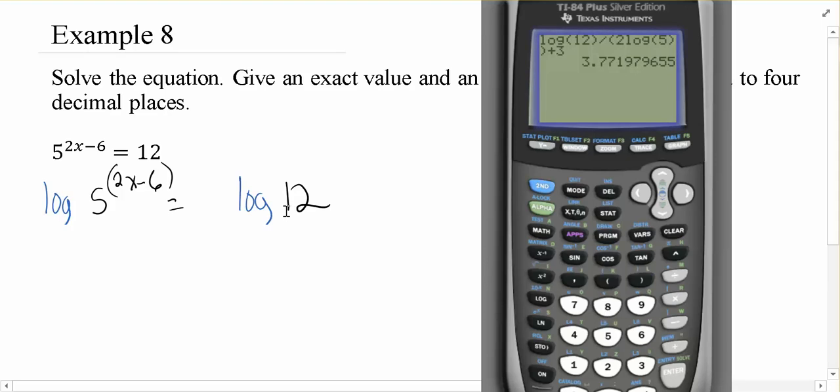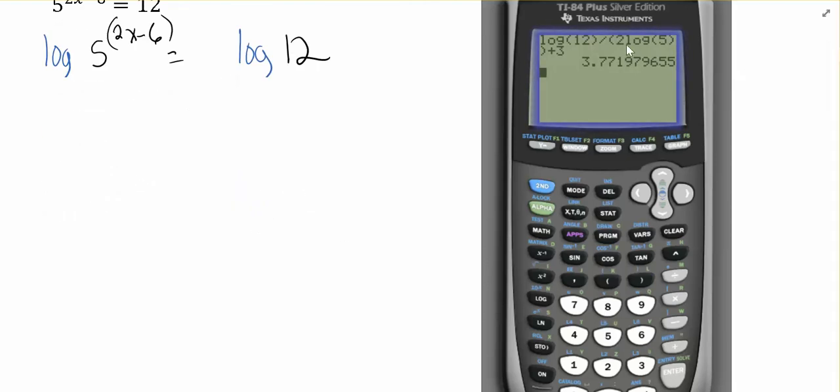So there's where all of my parentheses and everything need to be. So you can see all those parentheses to get that proper value of 3.7720.